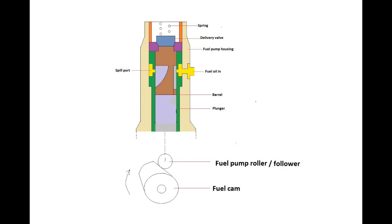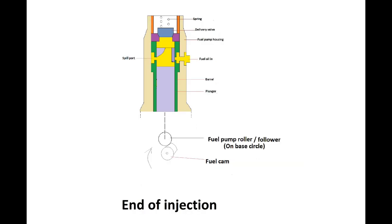During this time the plunger is still moving upwards and the fuel pressure in the high pressure pipe to the injector may reach several hundred bar. When the edge of the helical groove on the plunger uncovers the spill port, the high pressure fuel flows back into the suction line and injection ceases.